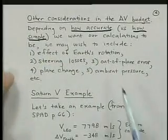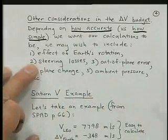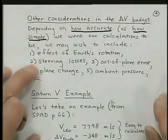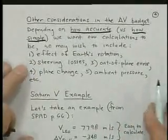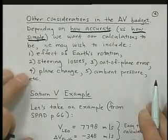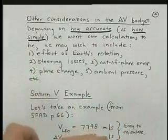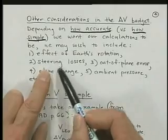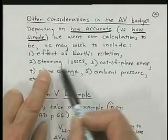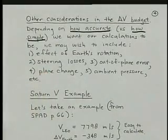Some things that I've ignored in this analysis is what about the effect of the Earth's rotation? We know that the Earth is rotating, and at the equator, it's about a thousand miles an hour that you would gain if you traveled east. We have also steering losses. We assumed that the rocket was always pointing along the current velocity vector, but in fact, in order to steer the spacecraft or launch vehicle into orbit, you have to point in a different direction than the velocity, and therefore you're losing some of your delta V to that.